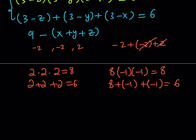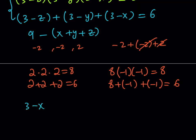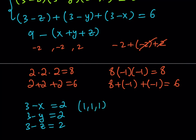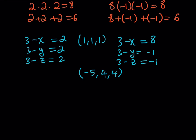Now let's solve each case. Since these are 3 minus x, 3 minus y, and 3 minus z: from the 2, 2, 2 case, we get x equals y equals z equals 1. From the 8, negative 1, negative 1 case — say 3 minus x equals 8, 3 minus y equals negative 1, 3 minus z equals negative 1 — we get the ordered triple negative 5, 4, 4. And x, y, z can be permuted.